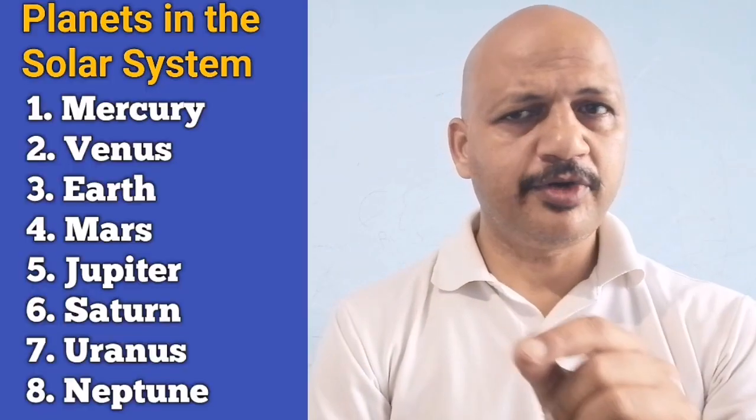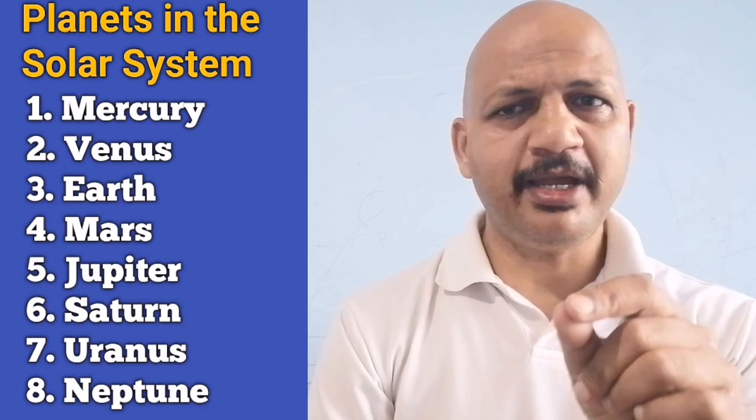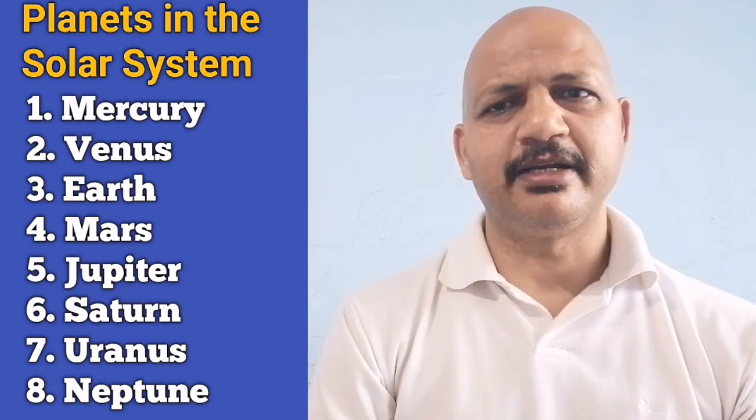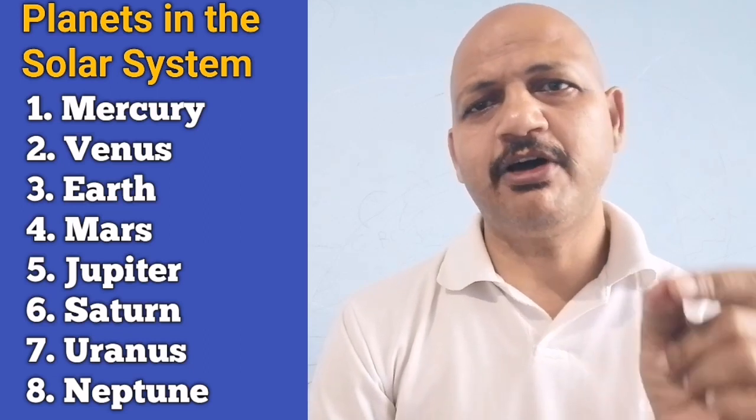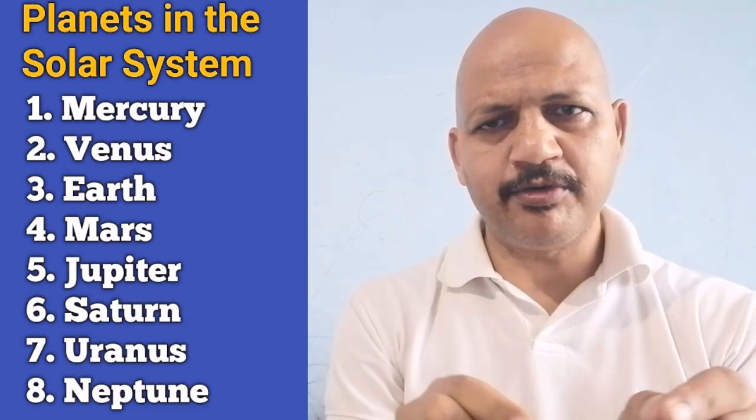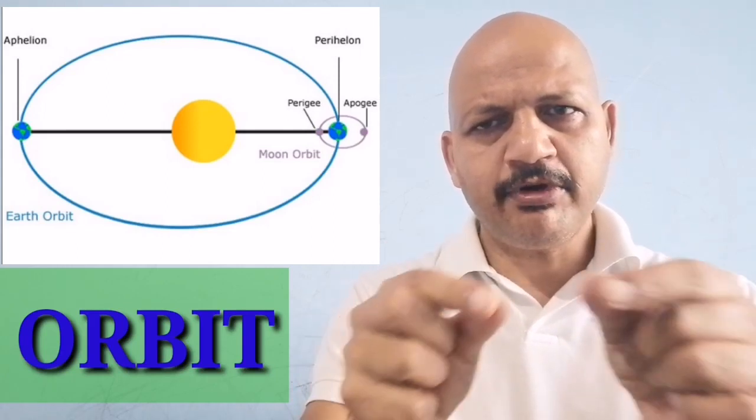There are 8 planets in our solar system. According to their distance from the sun, they are Mercury, Venus, Earth, Mars, Jupiter, Saturn, Uranus and Neptune. All these planets move around the sun on a fixed path. These paths are known as orbits or kaksha. These paths are not perfectly circular, rather they are elongated.